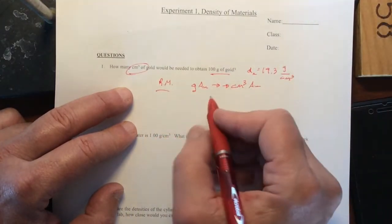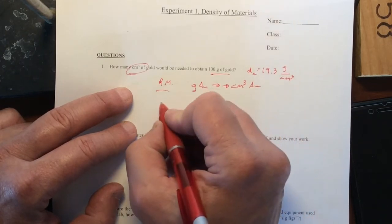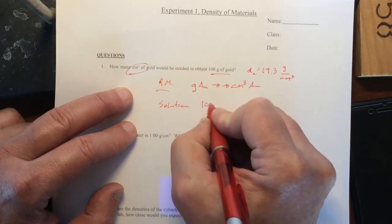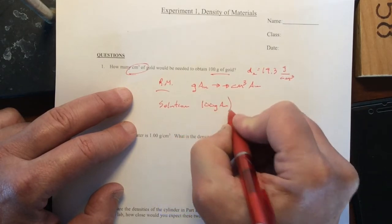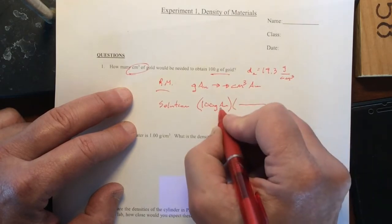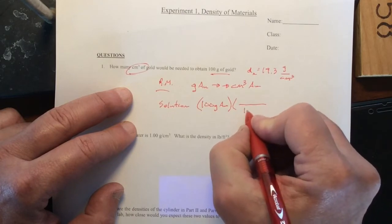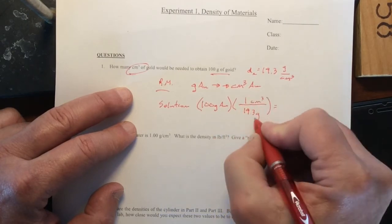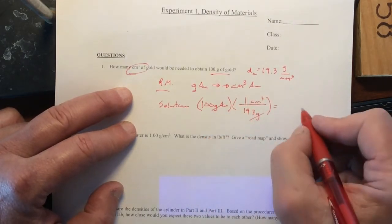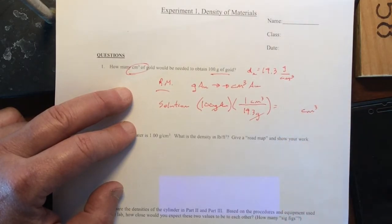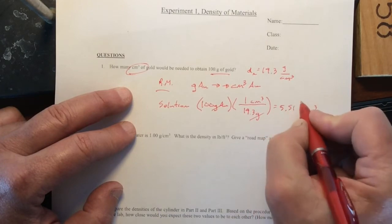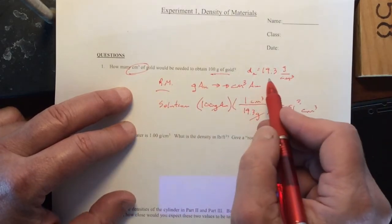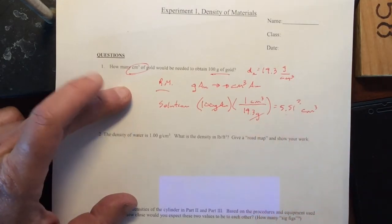The solution follows that roadmap. If I'm starting with 100 grams of gold, what I want to do is have those units of grams in the denominator. So I'll have 19.3 grams is 1 cubic centimeter. When I do this, the grams cancel and I'm left with just cubic centimeters there. If we do this, what do we get? It's a little over 5, 5.5 something, 5.51. I'm not even going to calculate it, I'll let you do that. And then sig fig wise, we had 3 sig figs in the 100. The density doesn't matter, it's sort of a definition even though it's only given to 3. So bottom line, 3 is appropriate there.